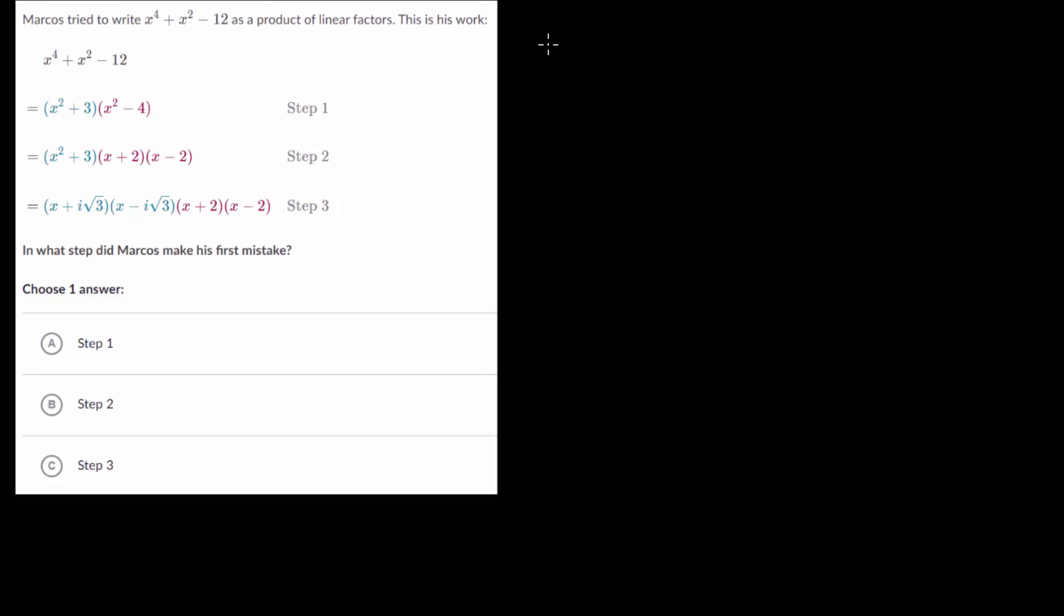We're starting with x to the fourth plus x squared minus 12. You might notice this looks similar to a quadratic. In fact, if we rewrote x to the fourth as x squared squared, then it might be more obvious that we have a type of quadratic expression here. Let's make a substitution: we can say that u is equal to x squared.